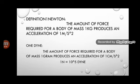1 Newton is defined as the amount of force required for a body of mass 1 kg to produce an acceleration of 1 meter per second squared. Similarly, 1 Dyne is defined in the CGS system, where distance is measured in centimeters and mass in grams.